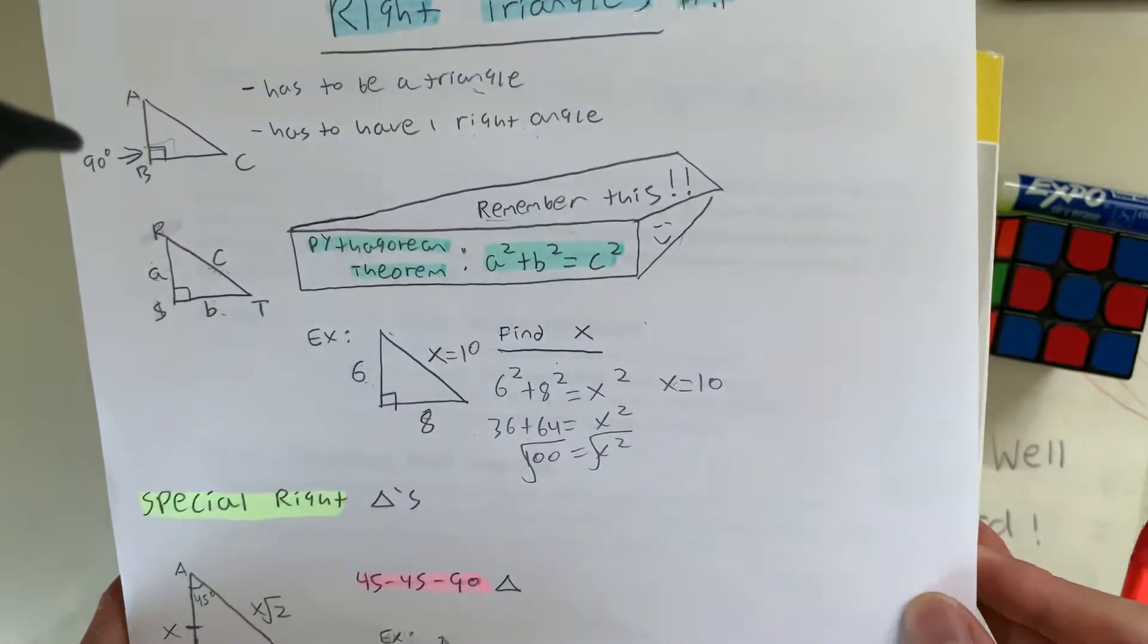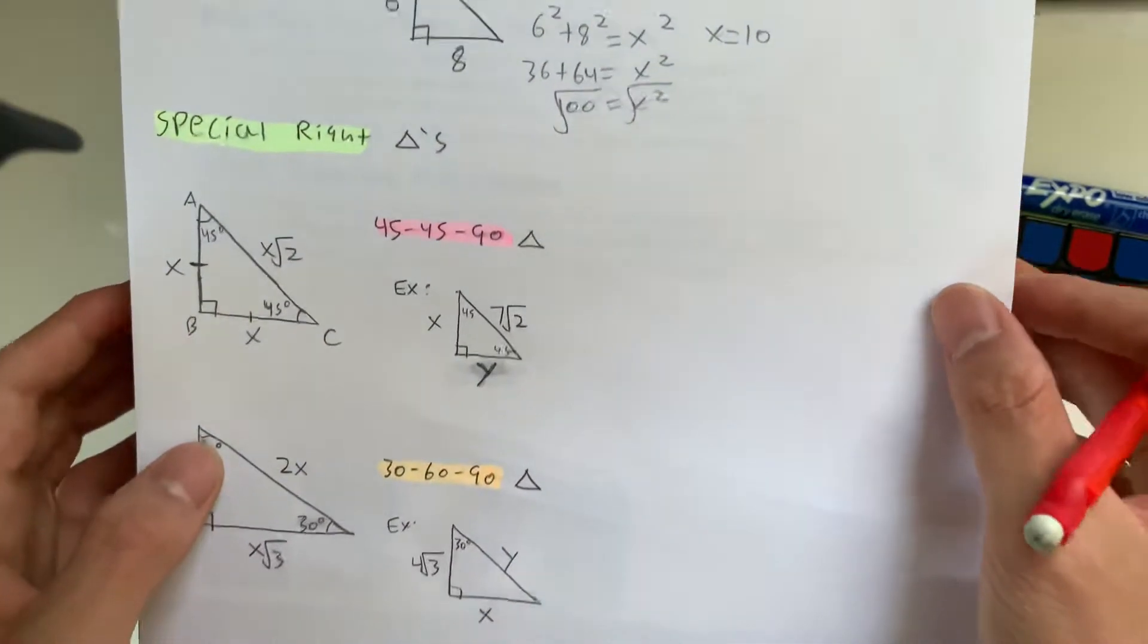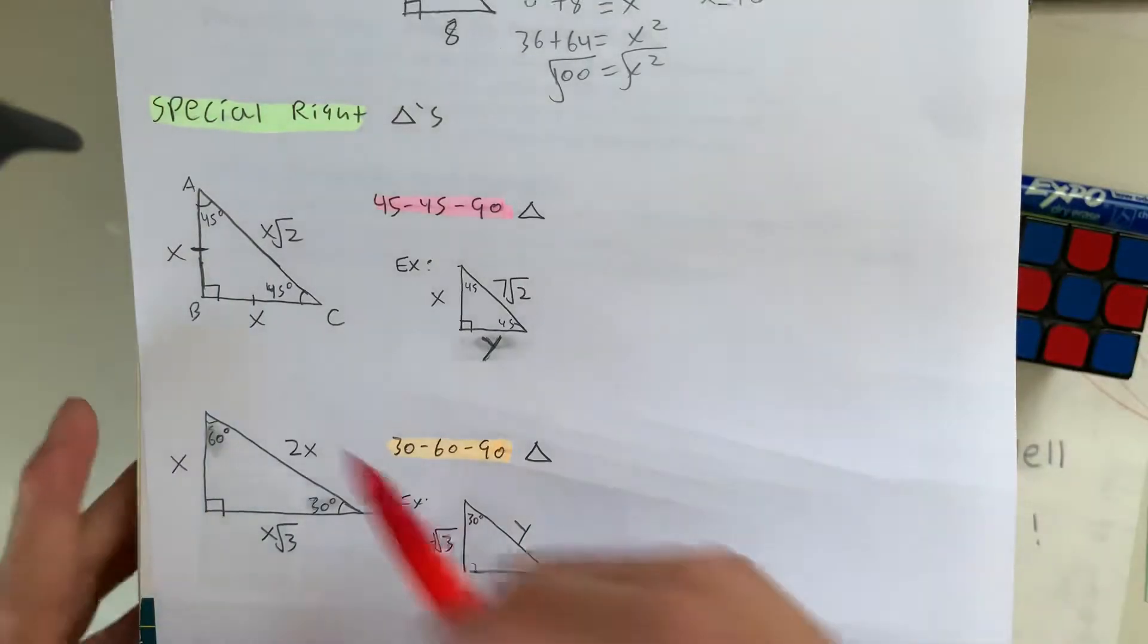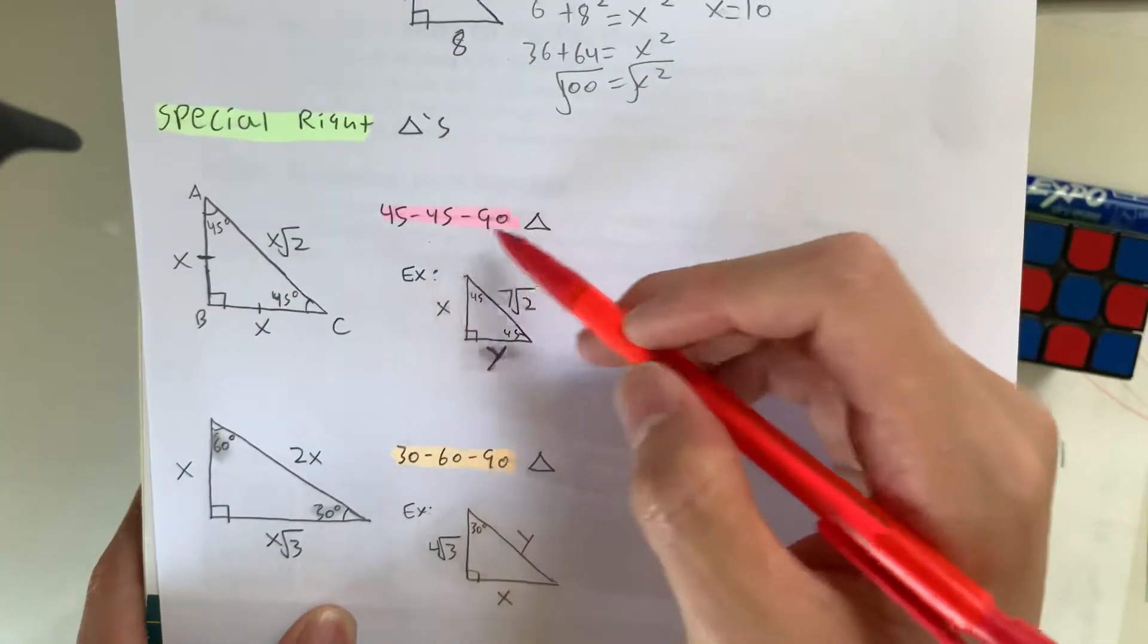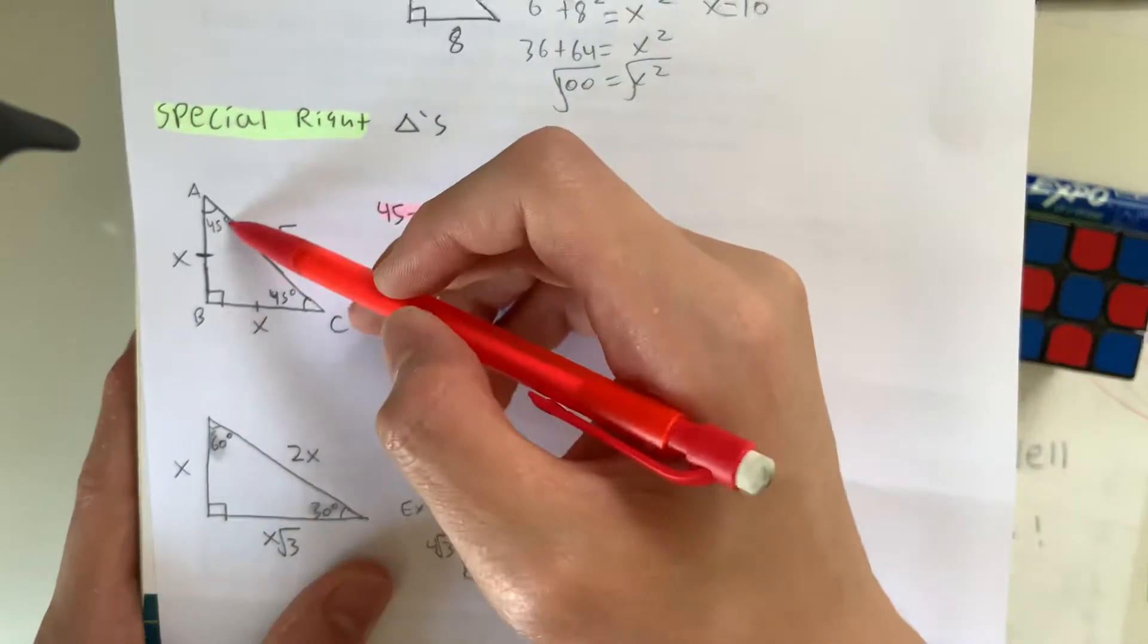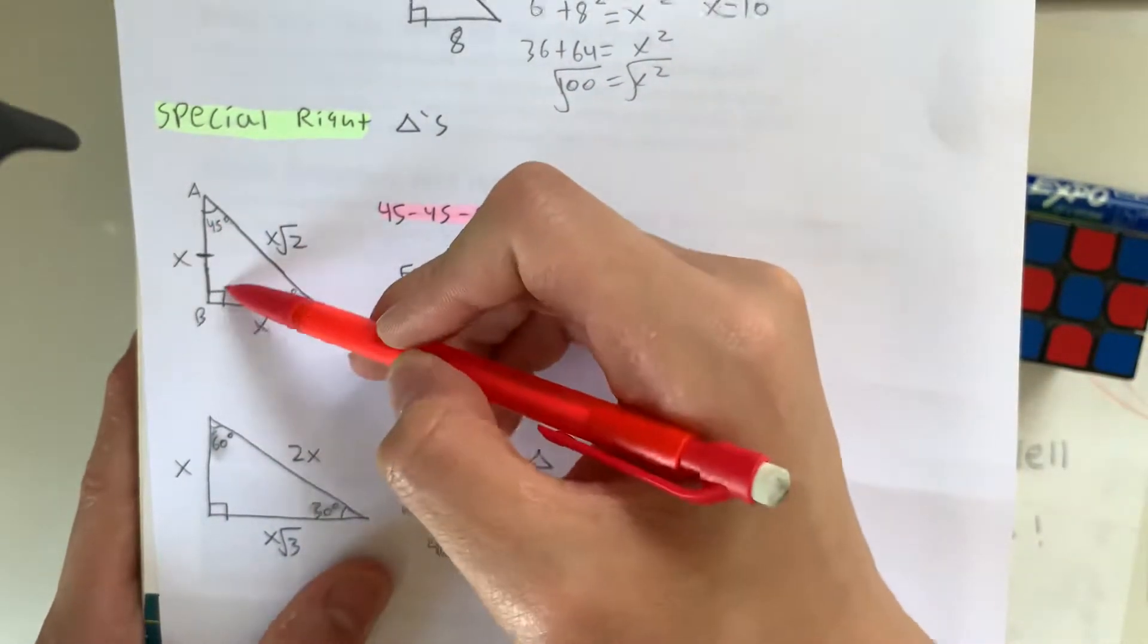And there are some special rules for special right triangles. So these are two examples right here. So number one is the 45-45-90 triangle, where the angle measures are 45 and 45 and 90, respectively.